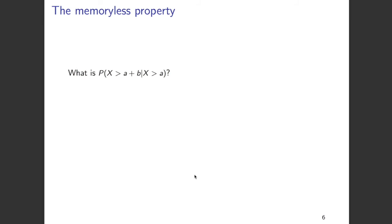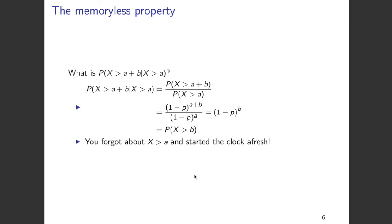Let's look at another example of the memoryless property: P(X > a + b | X > a). Using conditional probability, this equals P(X > a + b) divided by P(X > a), which evaluates to (1 minus p)^b — which is exactly P(X > b). This once again means that you forget about X > a and start the clock afresh. Given that X is greater than a, whether X will be greater than a + b depends only on b, as if you just start looking at X from point a.